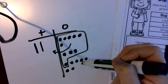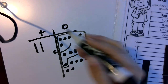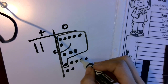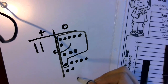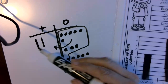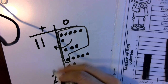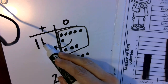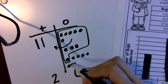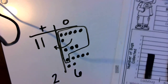Then I count what I have left in the ones place: one, two, three, four, five, six in the ones place. And one group of ten in the tens place. So 10, 20, 21, 22, 23, 24, 25, 26. So either way would work — you could draw them out this way or you could count them on the graph.